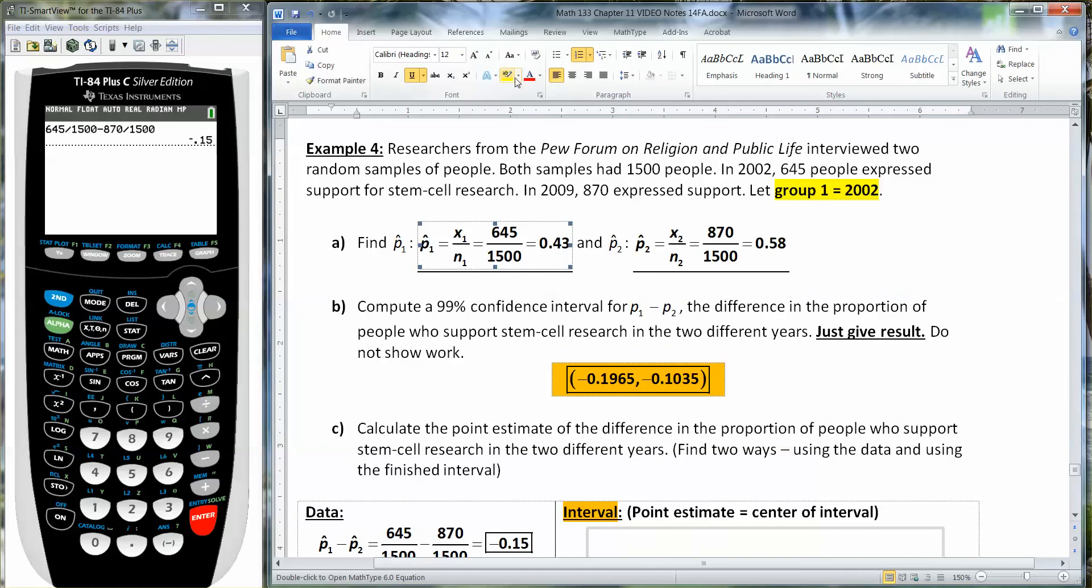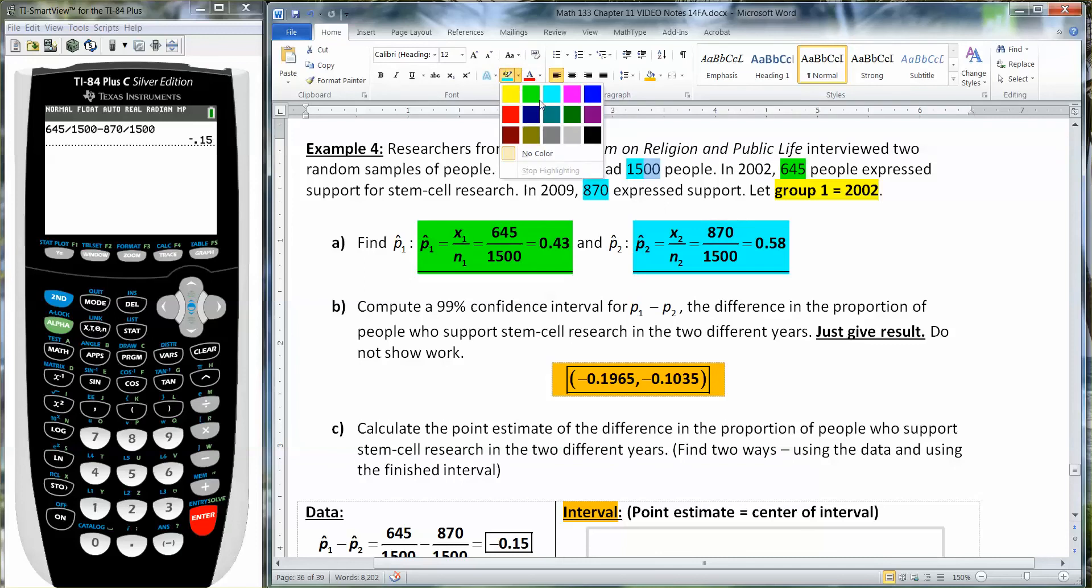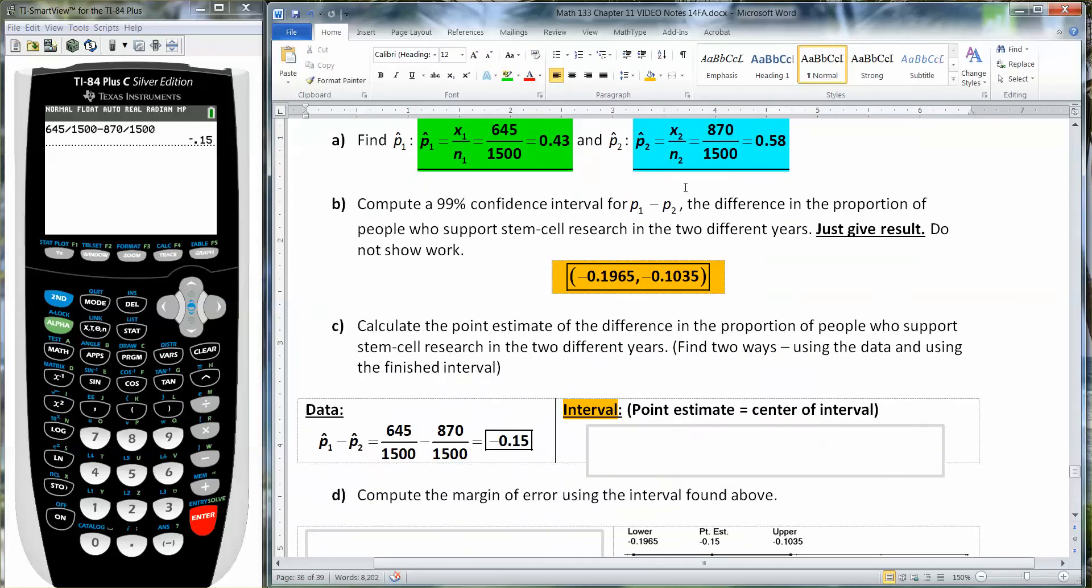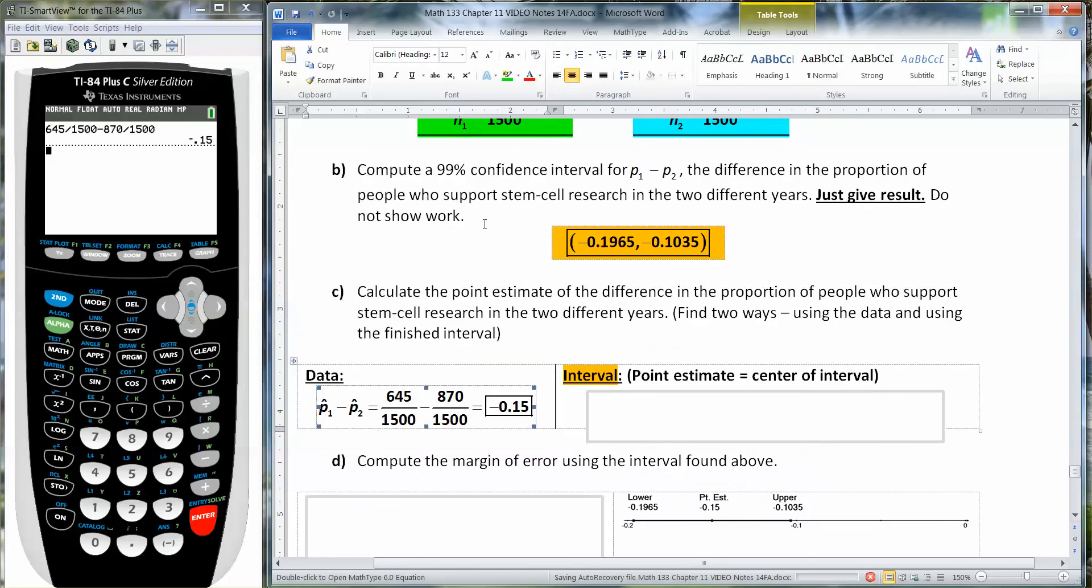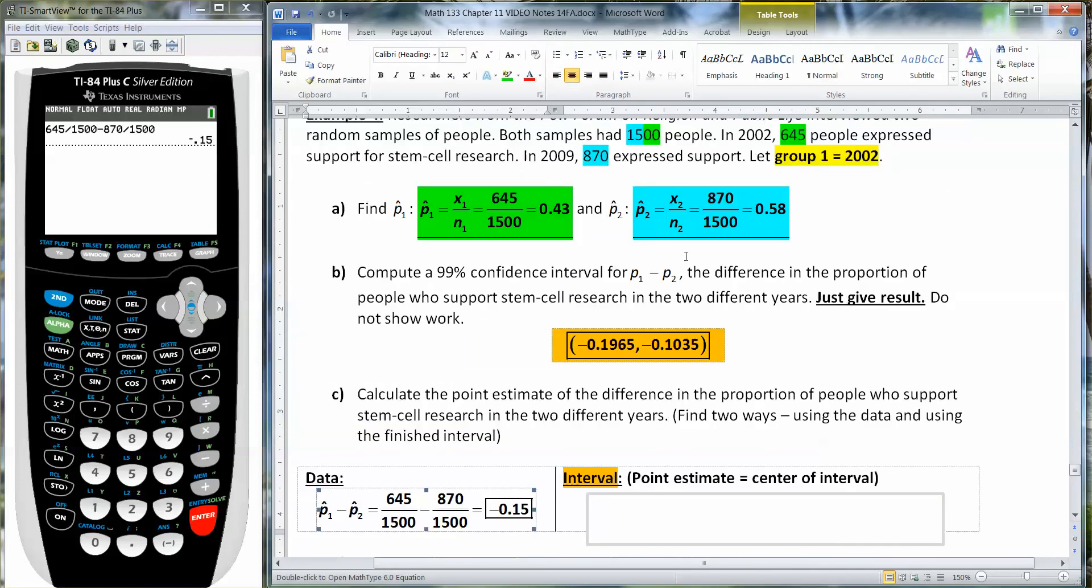And notice, right, this data right here comes from 645 right there. And then this right here comes from the 870. And then 1500 is really both of those. So I don't want to highlight them in either color. Here, I'll do half of it in blue and half of it in green because it's the same number for both of them in this particular instance. So that's what I'm using down here. I'm using those blue and green numbers. I'm using the p1 hat and the p2 hat.